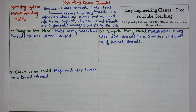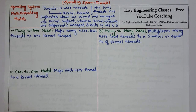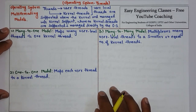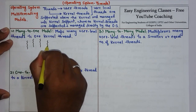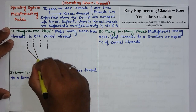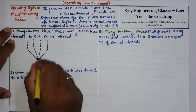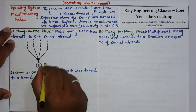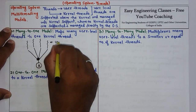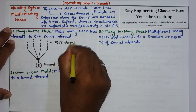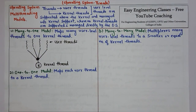The first model is the many-to-one model. In this, the mapping is done between many user level threads and one kernel level thread. We have many user level threads here, and these user level threads are mapped to a single kernel thread. So this is many user threads mapped to one kernel thread.